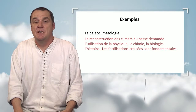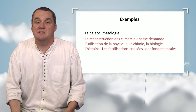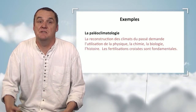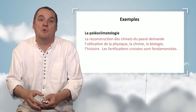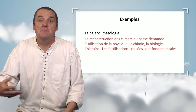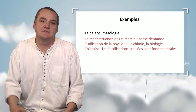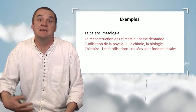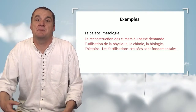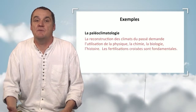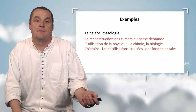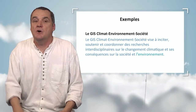One example: paleoclimatology. It is about reconstructing climates of the past and requires contributions from physics, chemistry — isotopic geochemistry, for instance — to understand proxies that tell you what the climate was in the past. Biology is also needed because some of these proxies which provide data for isotopic geochemistry need biology to be understood. And history, because observations made by researchers in the field of nature or earth will be calibrated on the timescale of history. This is the first example of interdisciplinarity.